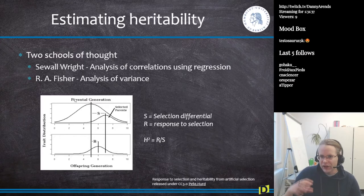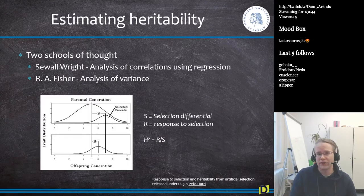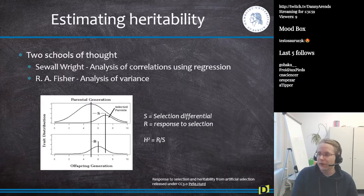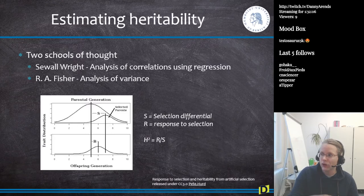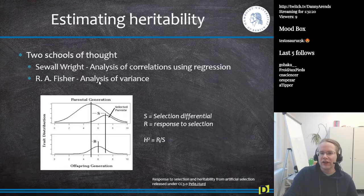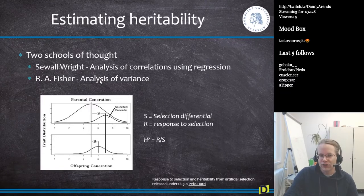There are two schools of thought for estimating heritability. The first, from Sewell, uses analysis of correlations via regression — how much variance in the phenotype is caused by additive or genetic alleles. The second, from Ronald Fisher, is analysis of variance: rather than looking at correlations between parent and offspring phenotypes, you analyze how the variance partitions.